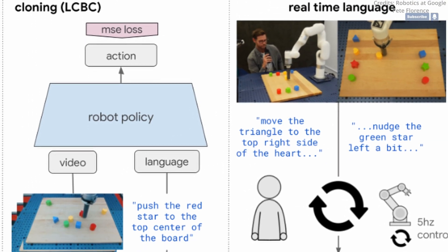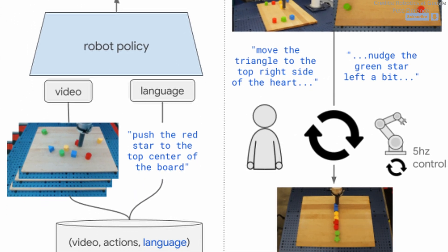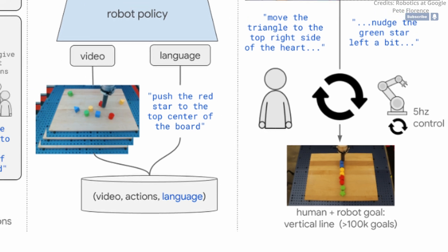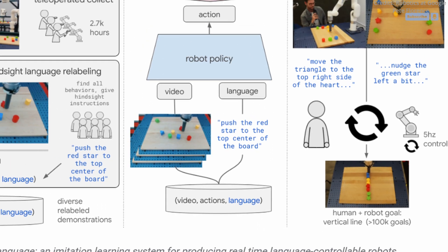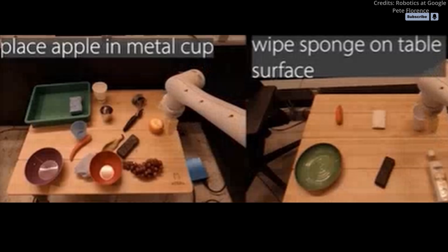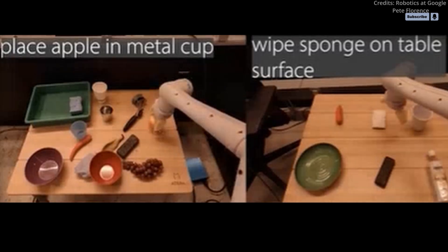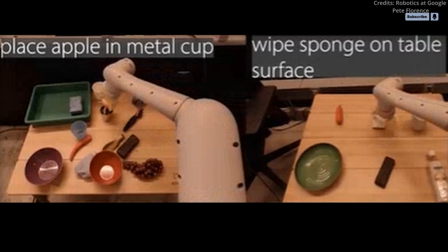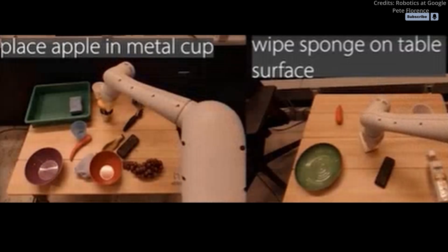The annotation process the Google Artificial Intelligence researchers used allowed them to collect the Language Table dataset, which contains over 440,000 real and 180,000 simulated demonstrations of the robot performing a language command, along with a sequence of actions taken by the robot during the demonstration.